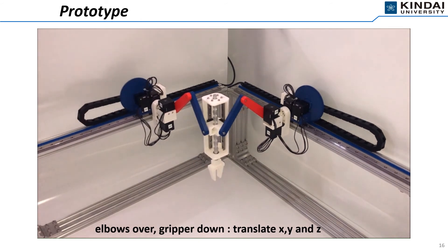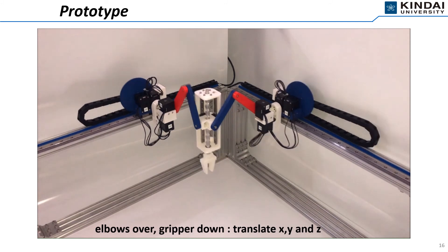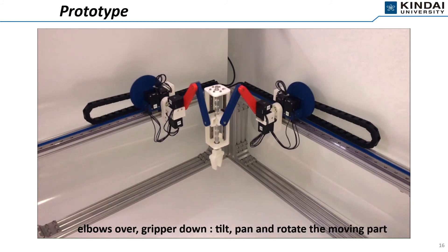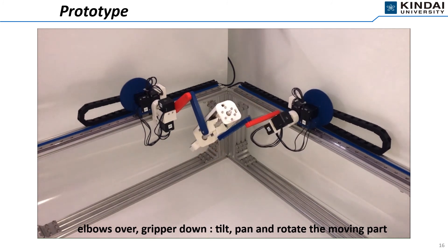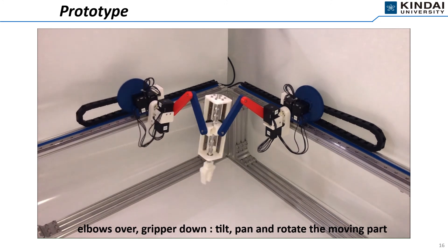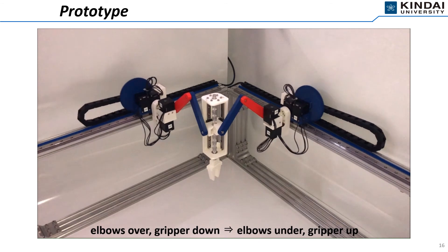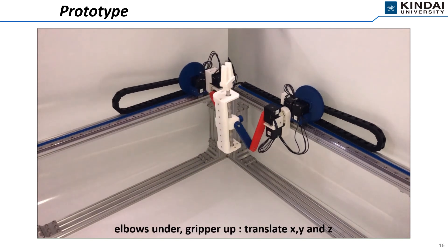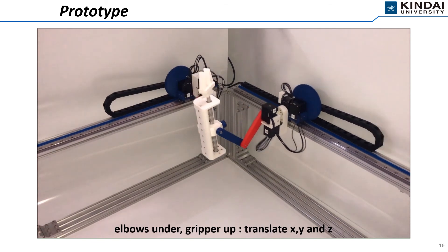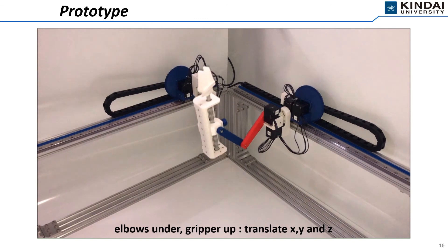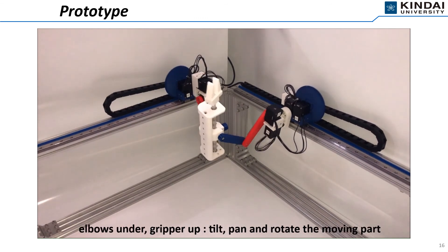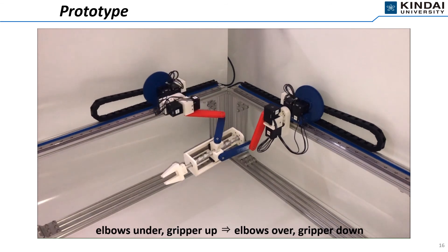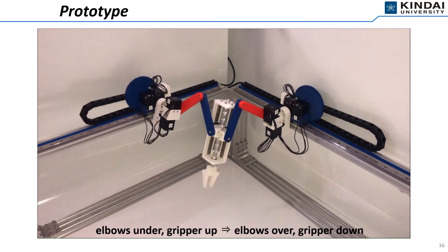This video demonstrates the motion of the prototype. Firstly, Atarigi drives the moving part along X, Y and Z directions. Secondly, Atarigi rotates the differential screw. Next, the moving part is tilting, panning and rotating. Then Atarigi switches from the elbows over and the gripper down to the elbows under and the gripper up. After that, Atarigi drives the moving part in the upper working area. Then Atarigi switches from the elbows under and the gripper up to the elbows over and the gripper down.